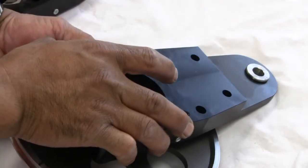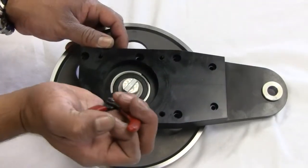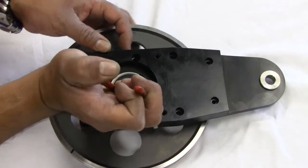Now turn the wheel over. Remove the other snap ring and side plate from the wheel.